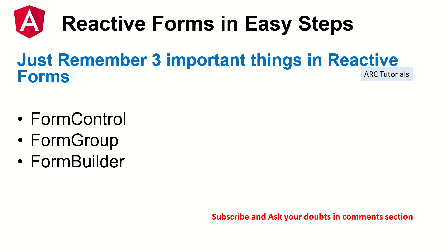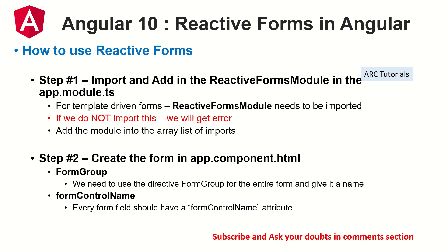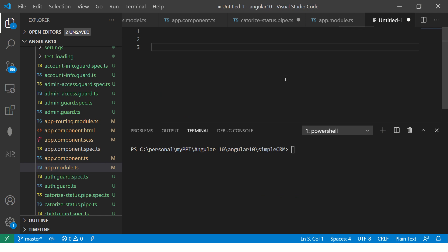We are going to do a hands-on example and learn by doing practical work in five simple steps. Step number one: we have to import the reactive forms module in the app module. If you create a module — say a users module — you import the reactive forms module into whichever module you are working with.